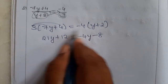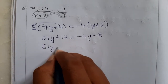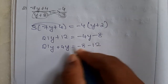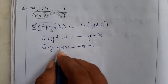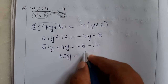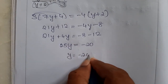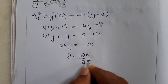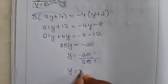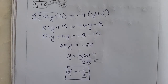Bring minus 4y to this side — it becomes plus, and 12 becomes minus 12. So, 21y plus 4y equals 25y, and that equals minus 8 minus 12, which is minus 20. Therefore, y equals minus 20 divided by 25. Simplifying with the common factor 5, y is equal to minus 4 by 5.